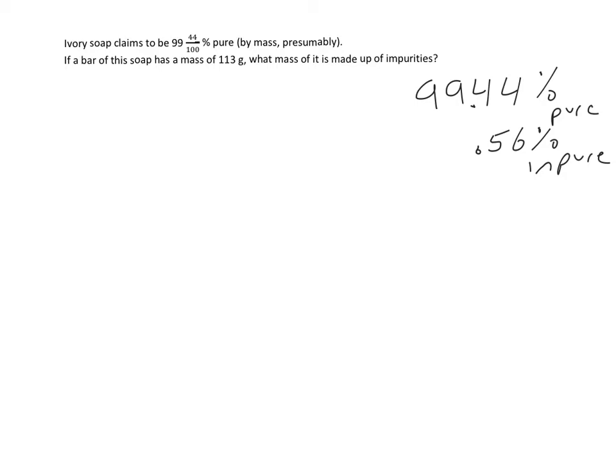So if there's 0.56% impurities, another way of saying that is that for every 100 grams of actual soap, in 100 grams of soap there are 0.56 grams of impurities. And we can do this with any percentage. We can say something out of 100. 100 of the whole thing is equal to how much of the smaller thing.